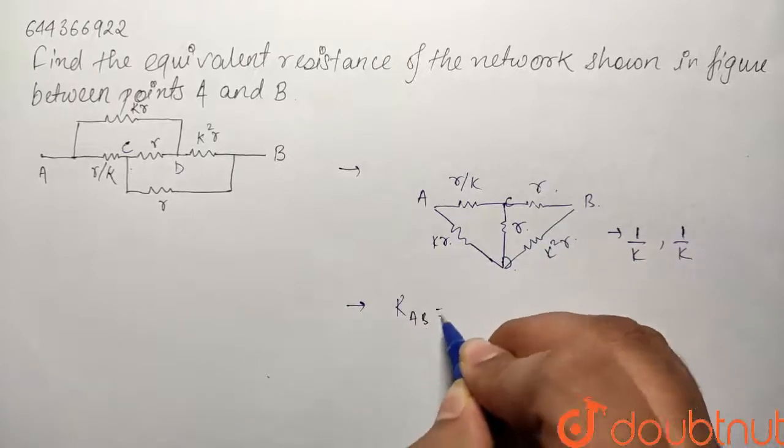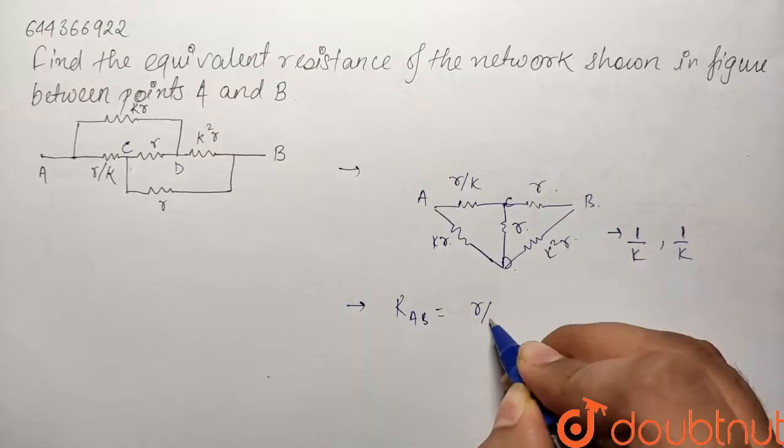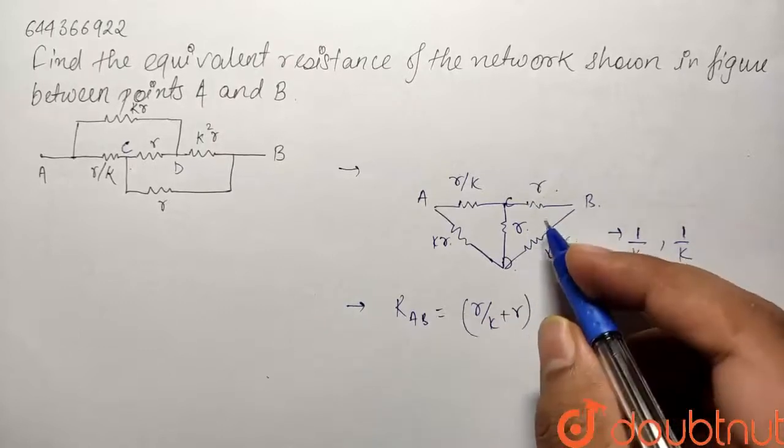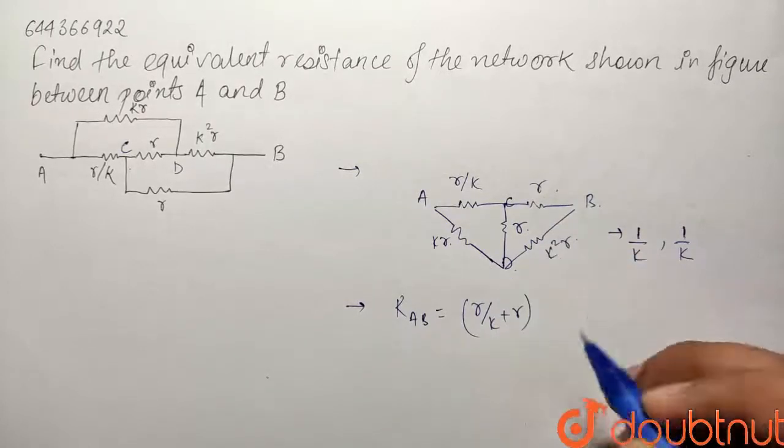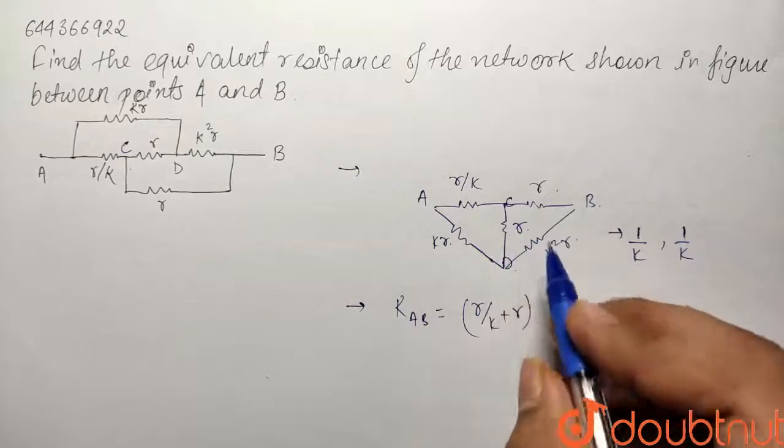So the net R AB will be nothing but R by K and R in series and this KR and K square R will be in series and both of these will be parallel.